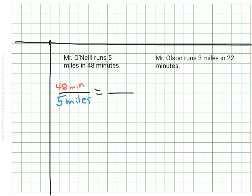So I've started to set this up. I know it takes Mr. O'Neill 48 minutes to run five miles, so I have that on the first part of my ratio, and then I'm trying to figure out how long it takes him to run one mile. Since I have miles in the denominator, I'm going to put one mile here as my denominator on the other side.